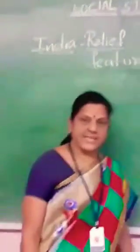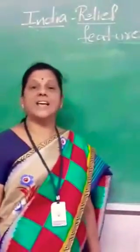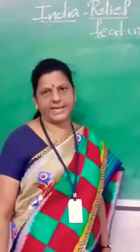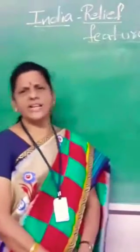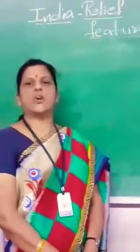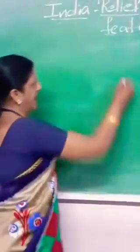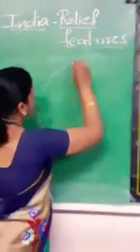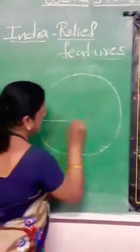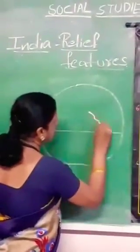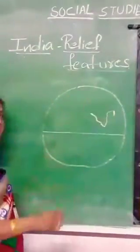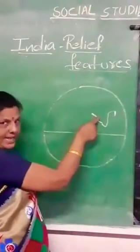Before going to the lesson, first we have to know the exact location of India. You already learnt about latitude and longitude for specifying any place or region accurately. India is located in the north eastern hemisphere — that means above the equator.